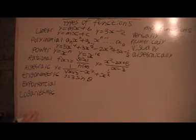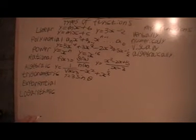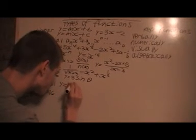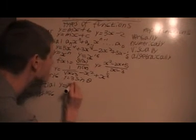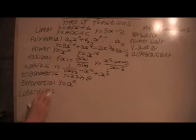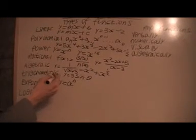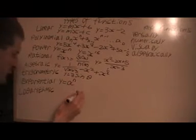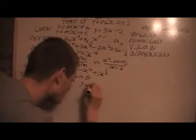An exponential function is y equals a to some power n. So a is a constant and the n here is the variable. So an example of a function would be y equals 2 to the n.